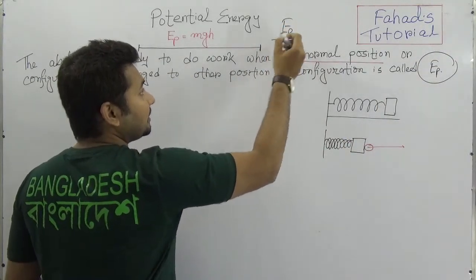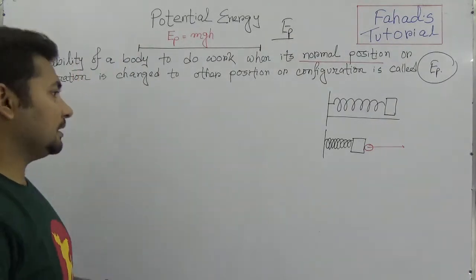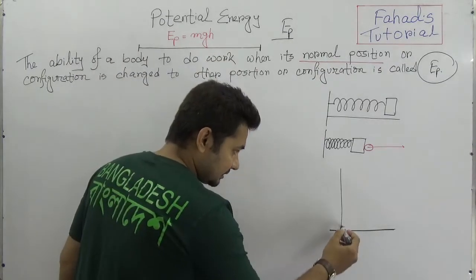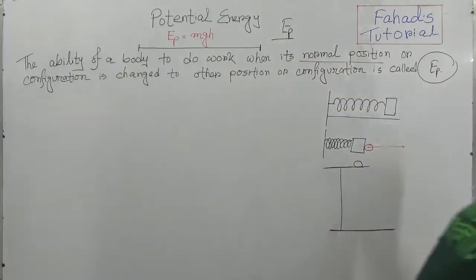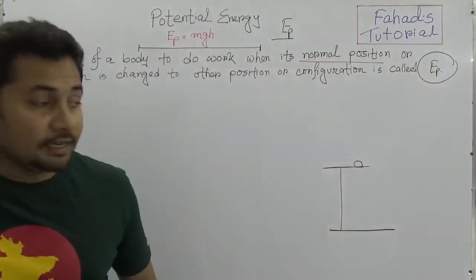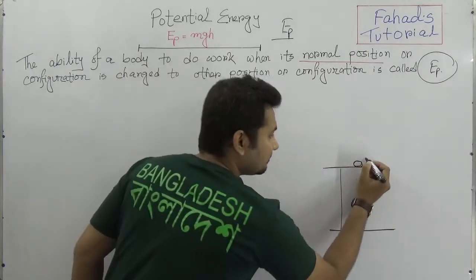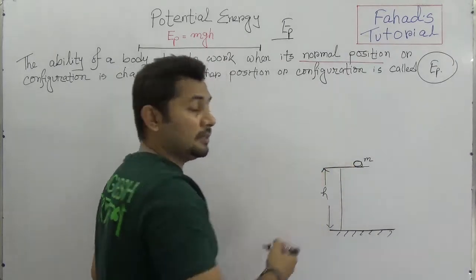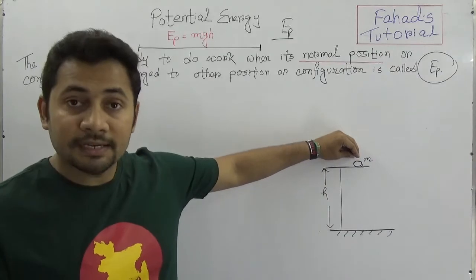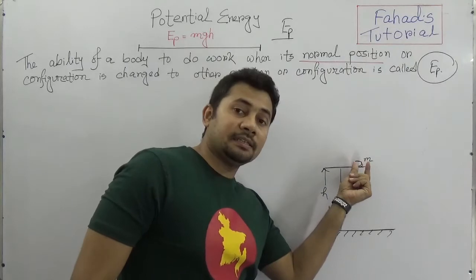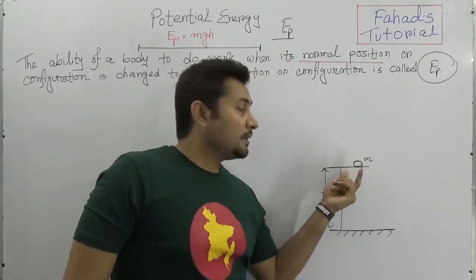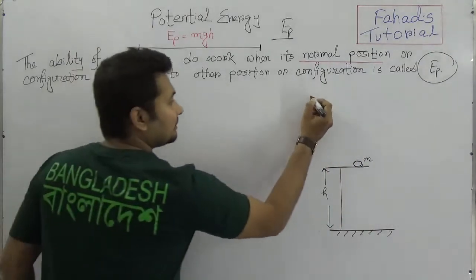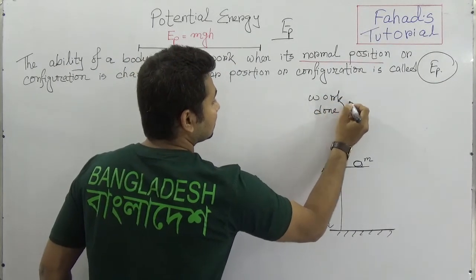So how do we measure potential energy? Think about a vertical height. Suppose a body of mass m kilograms is placed at height h from the earth's surface. Somebody lifts it to height h, and when this mass is placed there and we let it fall, this amount of energy — the potential energy EP — will be stored in that mass.